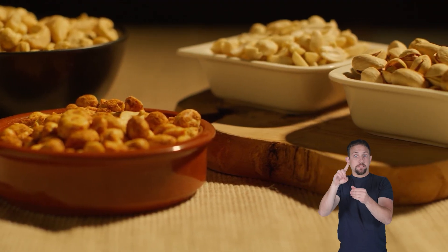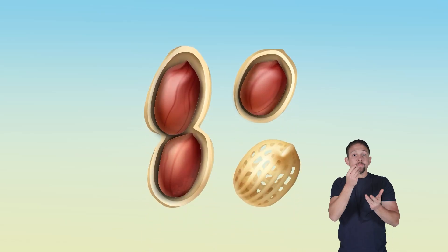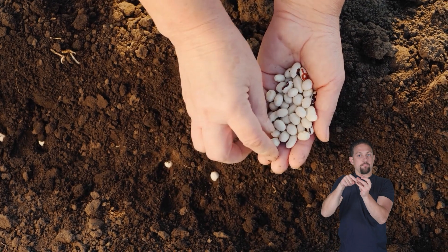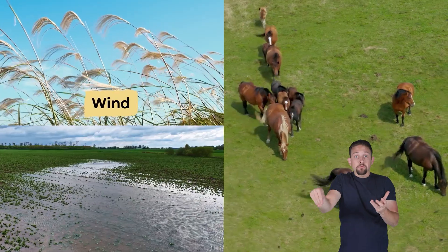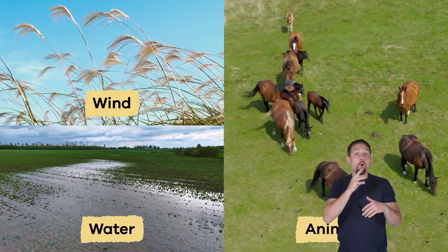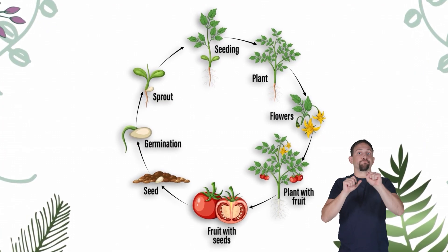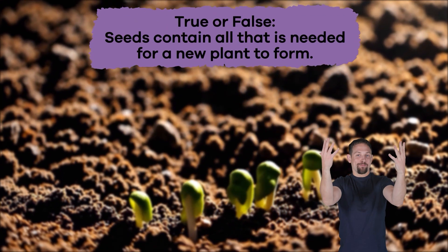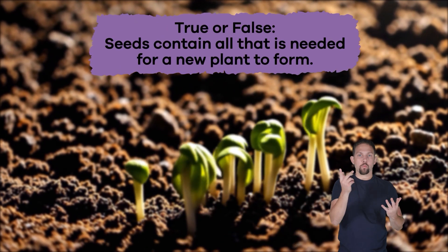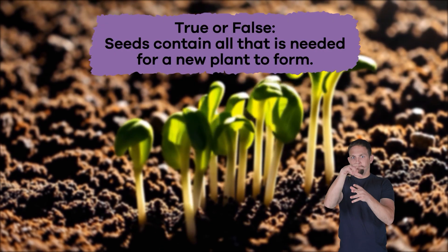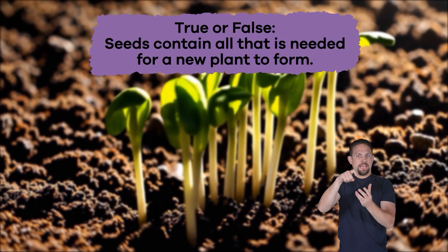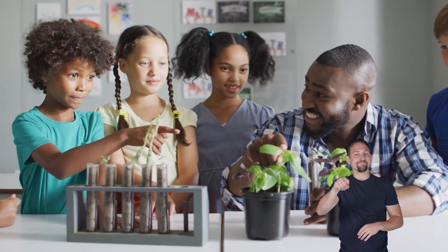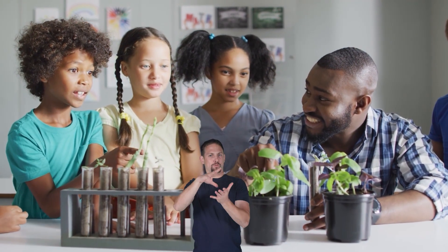Last up are the seeds. They contain all that is needed for a new plant to form. The nutrients inside the seed are used as food, and the seed itself is protected by an outer coating. Seeds can be moved from one place to another by wind, water, or animals, and then the whole process begins again. True or false: seeds contain all that is needed for a new plant to form. True!